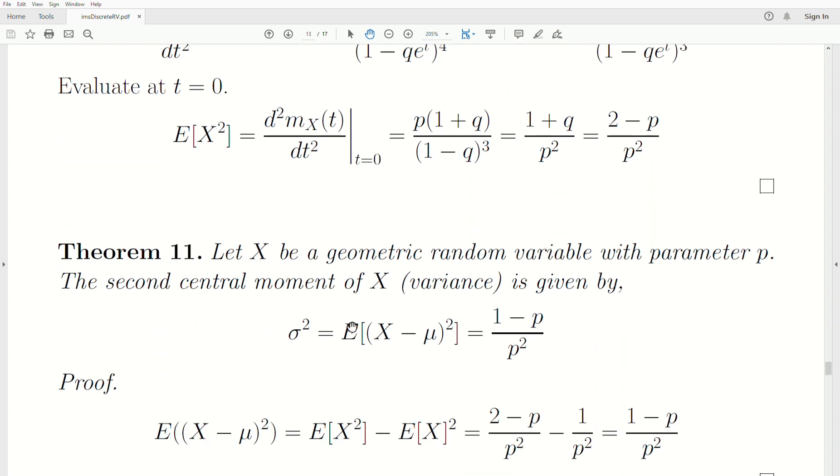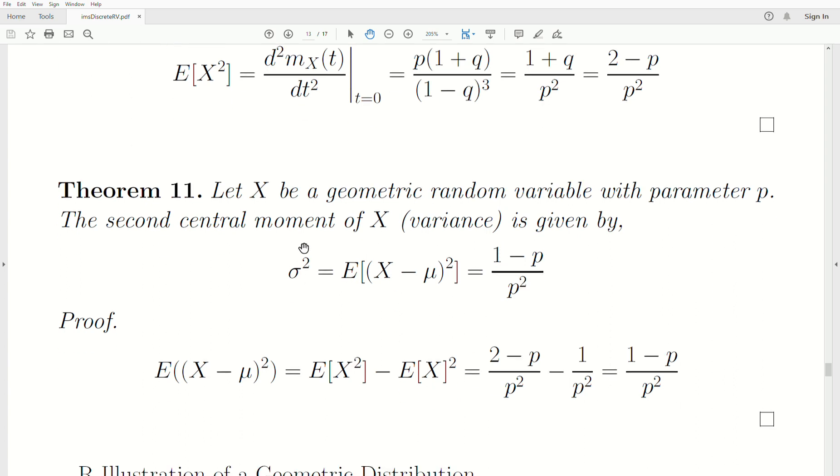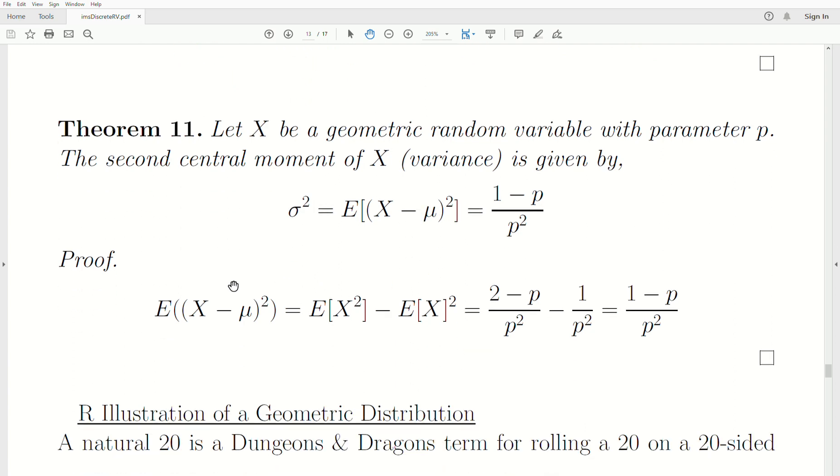Now theorem 11. Let X be a geometric random variable with parameter P. The second central moment of X, which is the variance, is given by one minus P over P squared. So sigma squared is equal to the expected value of X minus mu quantity squared. That's the second central moment.